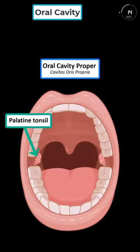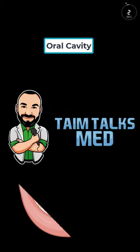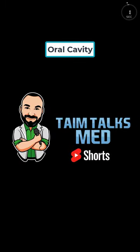The palatine tonsils, part of the immune system's first line of defense in the throat, can undergo significant enlargement during an infection due to the expansion of lymphatic tissue and increased blood flow to help combat invading pathogens. That's your oral cavity in a minute — thanks for watching.